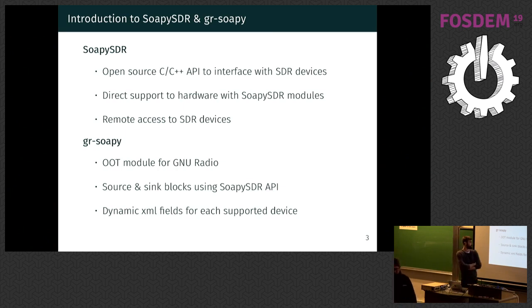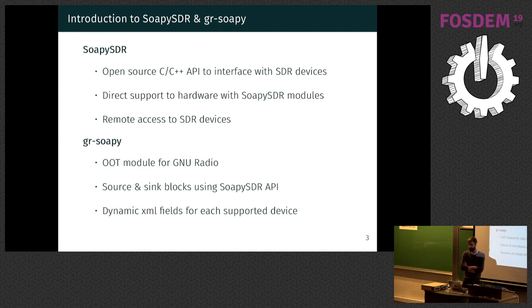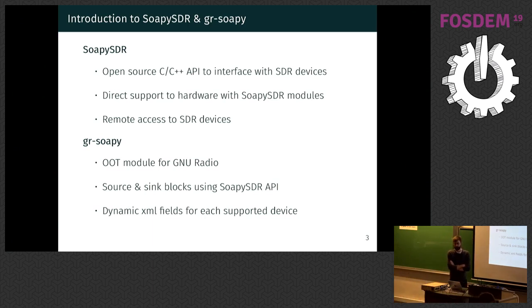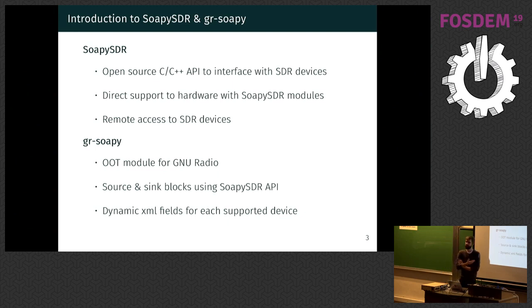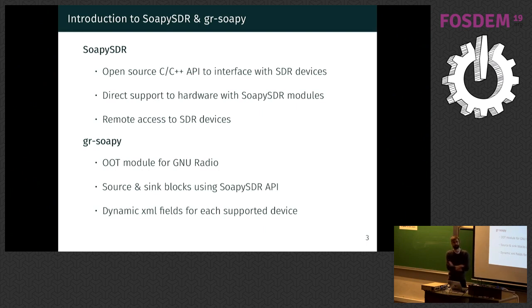Here starts our work, which is GR SoapySDR, an out-of-tree module for GNU Radio. It provides a source and sink block that wraps the SoapySDR functions the API provides. It's really similar to Osmocom, but what we do differently is that we try to have dynamic parameters in our XML blocks, so it's easier for users to configure the devices correctly.